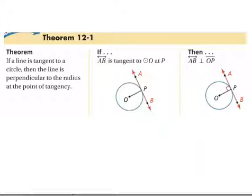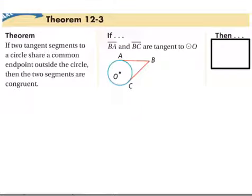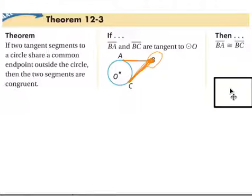Now we're also going to find that our next theorem here states that if BA and BC are tangent to the circle, and they have the same point out here, which is point B, then those are going to be congruent. BA is going to be congruent to BC. So that means that this line is congruent to that one.